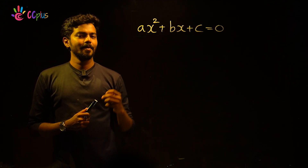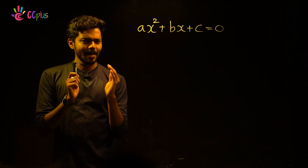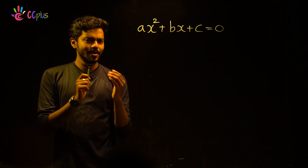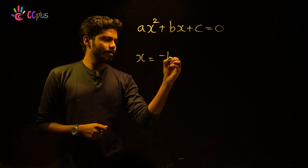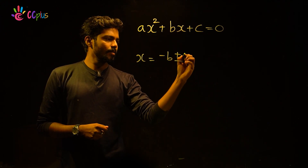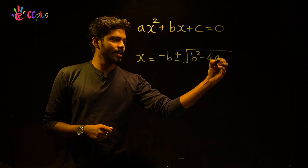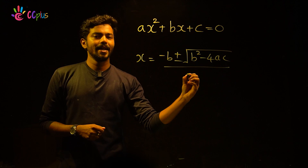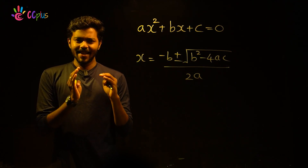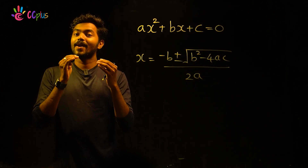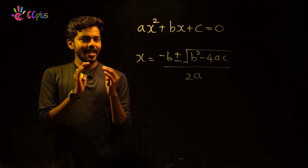If we solve the general form of this quadratic equation, we can solve all quadratic equations using the formula: x is equal to minus B plus or minus root of B squared minus 4AC, all divided by 2A.